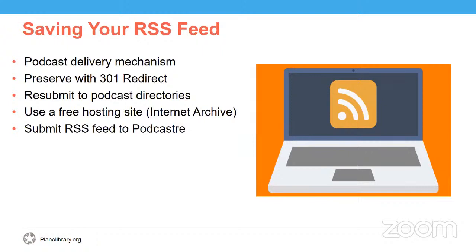In order to preserve your podcast, you must preserve your RSS feed. There are several ways you can preserve your RSS feed. First, you can speak with your podcast hosting platform about whether or not they offer a 301 redirect service. A 301 redirect service is a permanent web address redirect that allows someone accessing the old web address to automatically be transported to your new web address. For podcasters, this means that if you move your podcast from one podcast hosting platform to another, the podcatchers will still be able to use your old podcast hosting platform's RSS code and be redirected to the new podcast hosting platform so your listeners never lose access to your podcast. Most reputable podcast hosting platforms will offer this service, but not all do.